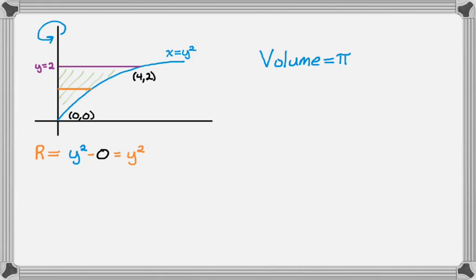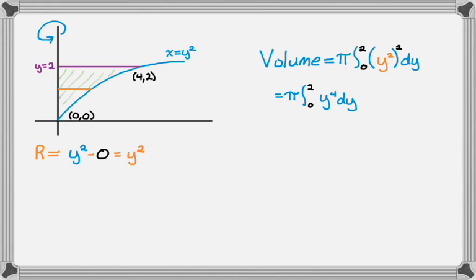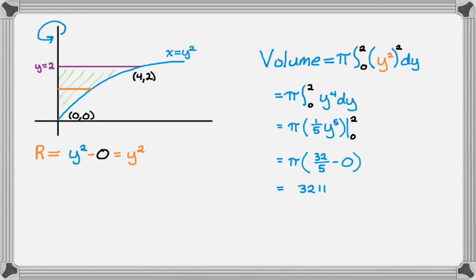Now I can set up my volume. At this point it's exactly the same, just spelled differently. I simplify, find the antiderivative, and evaluate. Nothing too exciting here — if you've gotten good at doing these around a horizontal axis, then the vertical is really no different. Let's try another one.